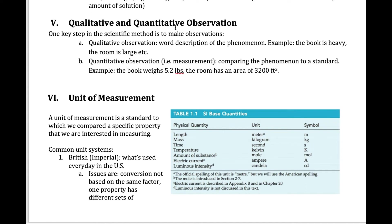One of the most important steps in the scientific method is to make observations. In chemistry and in science in general, we have two different types of observations. We can make qualitative observations, which are basically just word descriptions of a phenomenon. For example, you might say the book is heavy, the sky is blue, or the room is large.